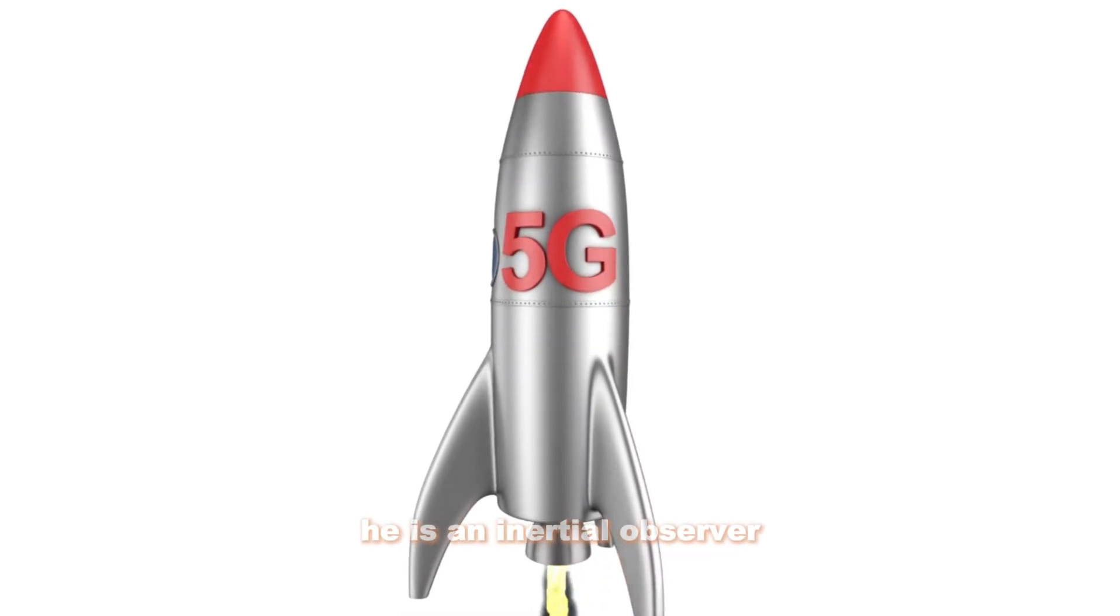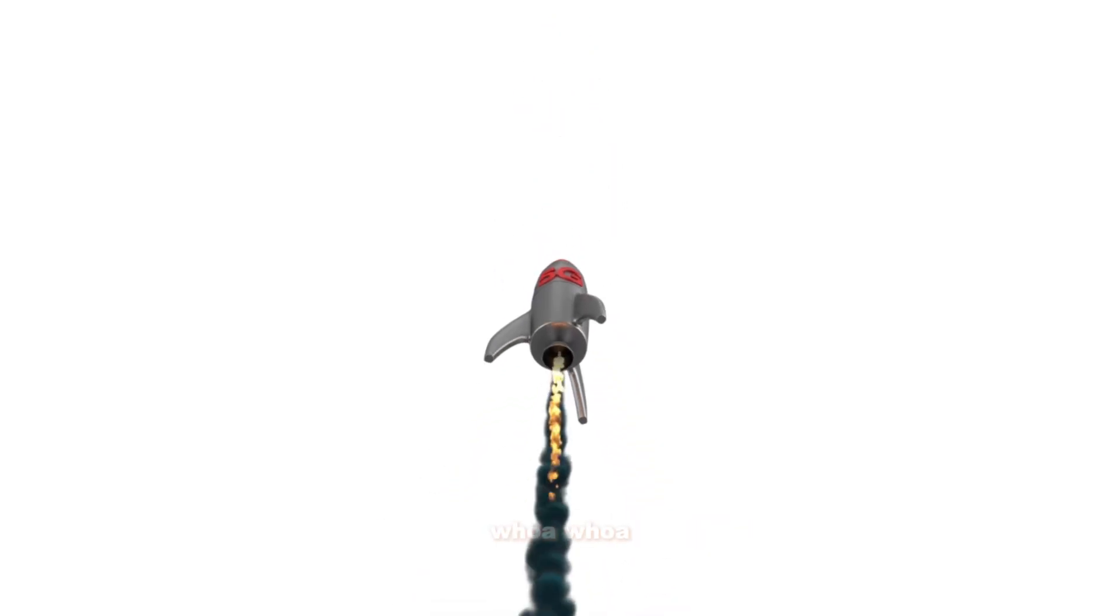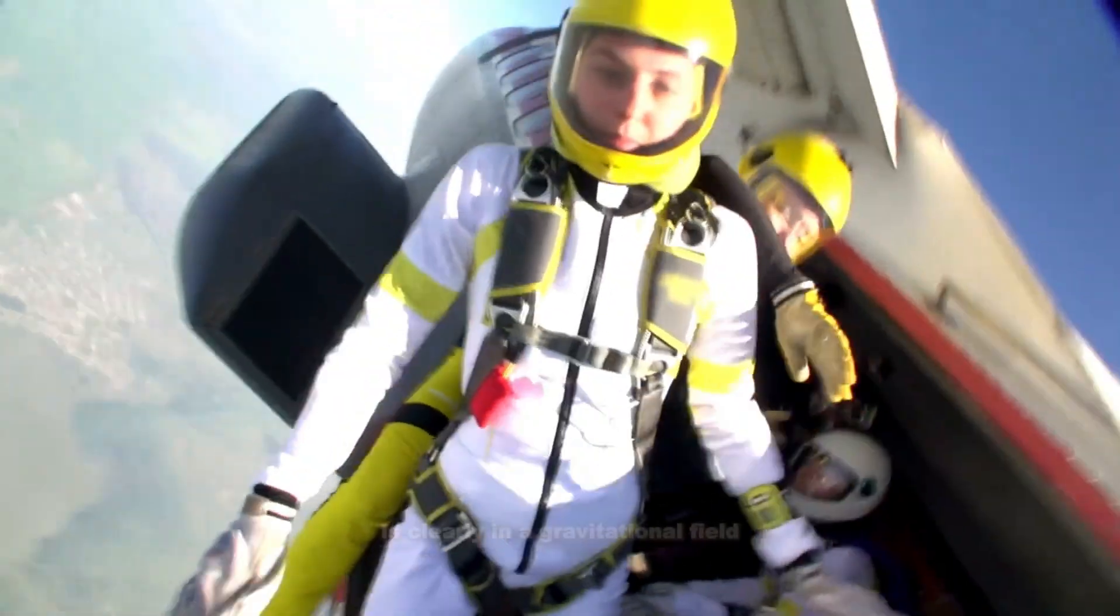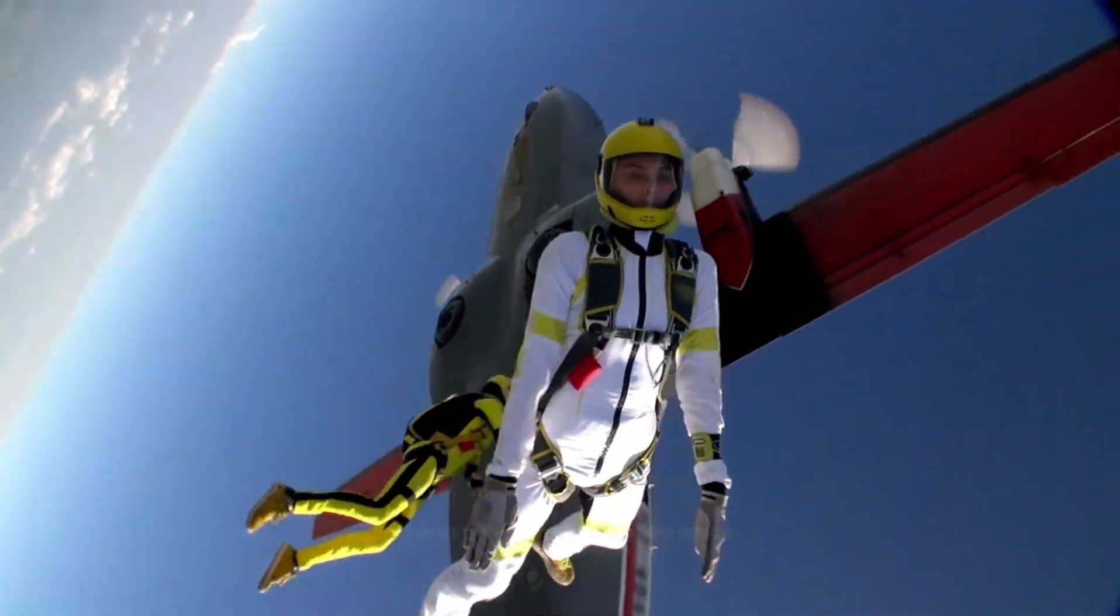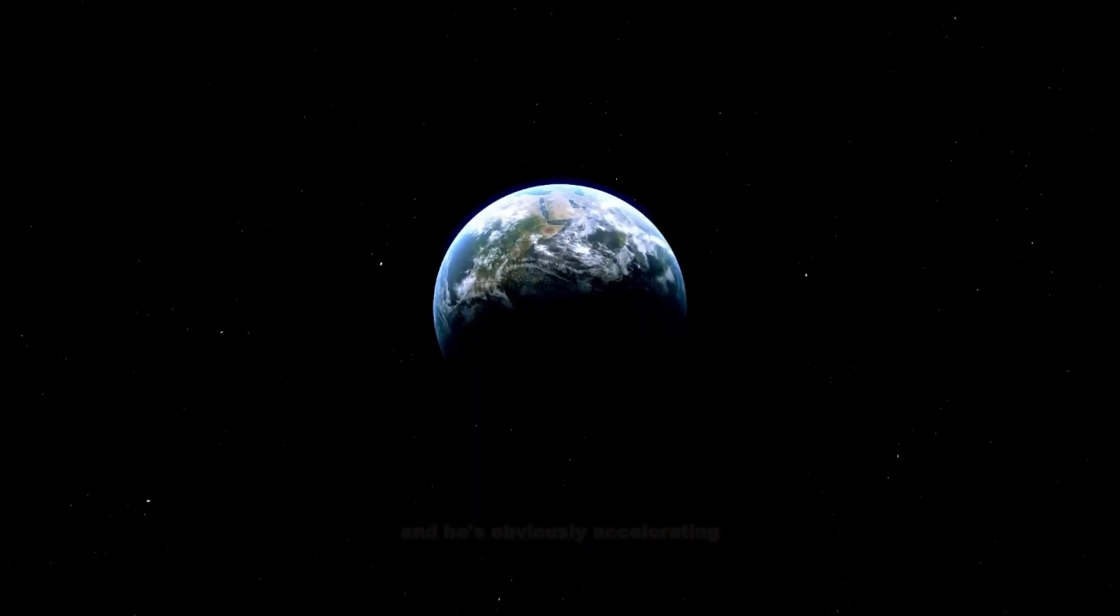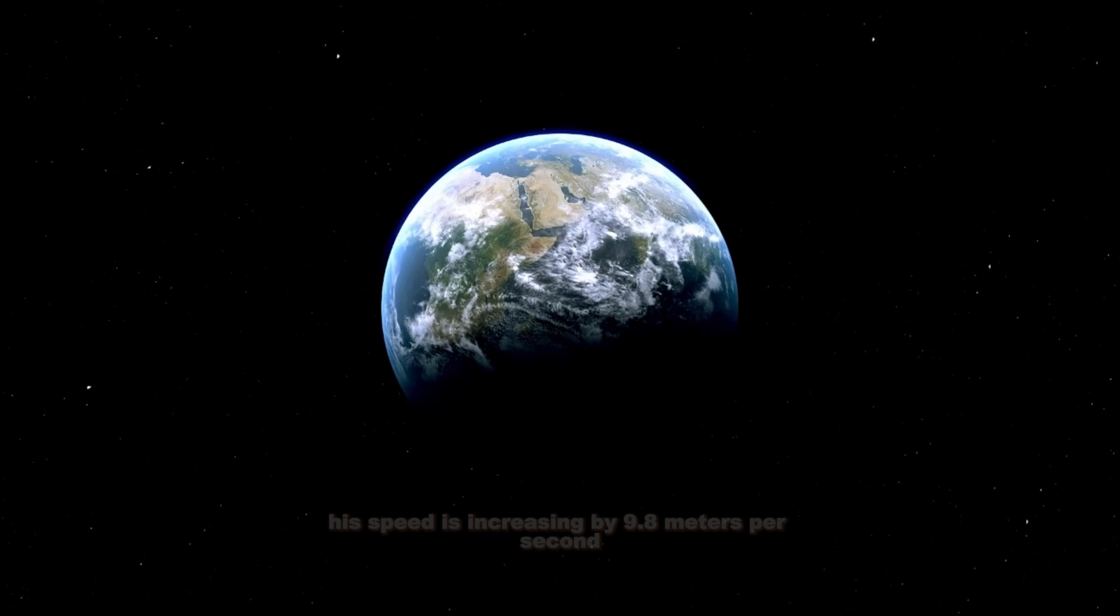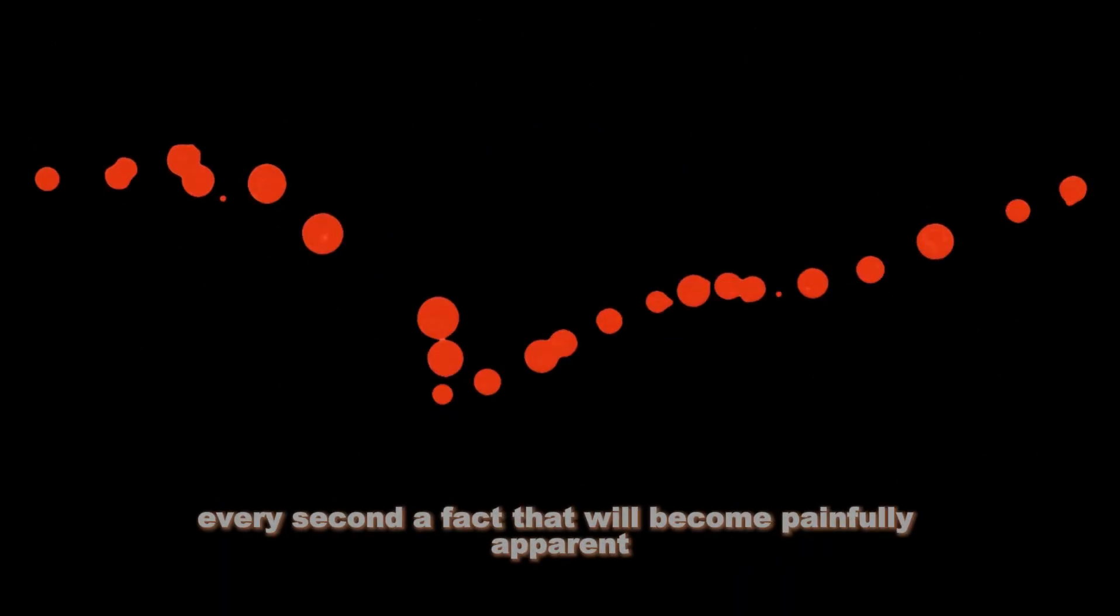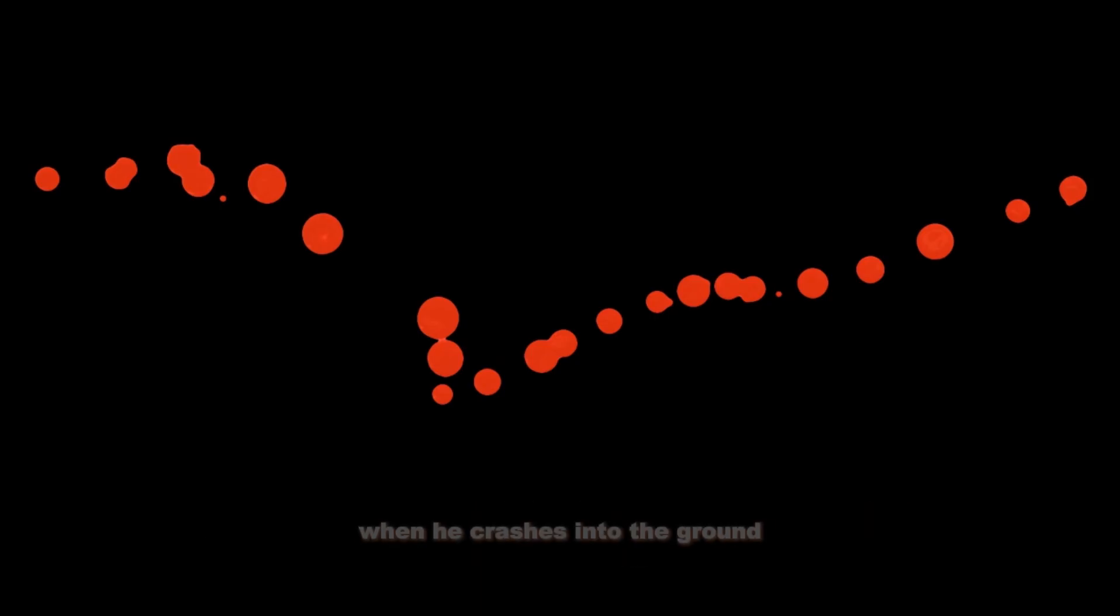He is an inertial observer, just like Rocketman. I can see how both of these observers feel weightless, but the man falling from the roof is clearly in a gravitational field. I mean, he's right next to the earth, and he's obviously accelerating, his speed is increasing by 9.8 meters per second every second, a fact that will become painfully apparent when he crashes into the ground.